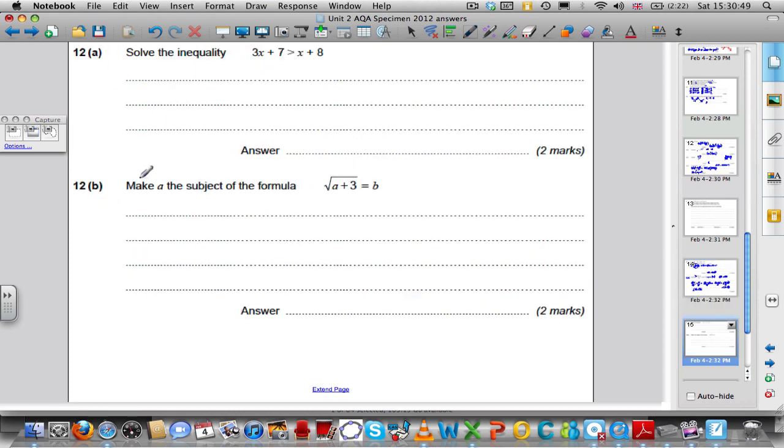OK, question 12a, solve the inequality. Remember, inequalities are almost exactly like linear equations, apart from when you multiply or divide by negative, but all the same processes generally apply. There's a 3x here and an x here, so I'm going to subtract x of both sides to get 2x plus 7 is bigger than 8. Now I'm going to subtract 7 of both sides to get 2x is bigger than 1, and then I'm going to divide both sides by 2 to get x is bigger than 1 half. And the solution is x bigger than 1 half, or x bigger than 0.5.